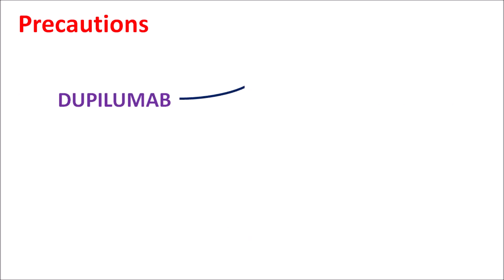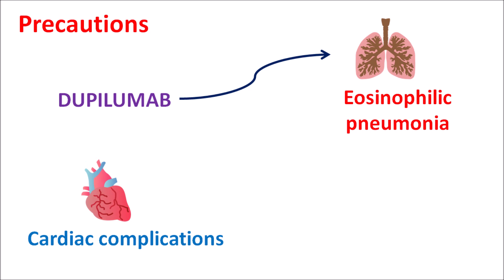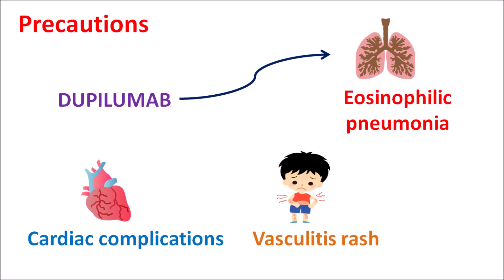Dupilumab can stimulate eosinophilic pneumonia, and this drug can increase conditions like eosinophilia. It can also increase cardiovascular complications. Vasculitic rash can be increased, which may co-exist with asthma. So in such people, dupilumab should be carefully used as it may increase the incidence of pneumonia.